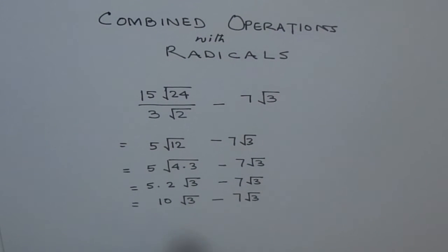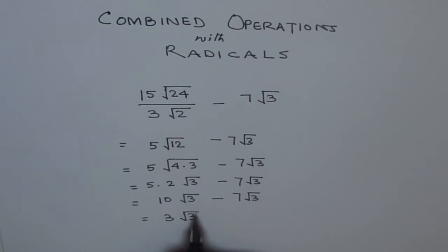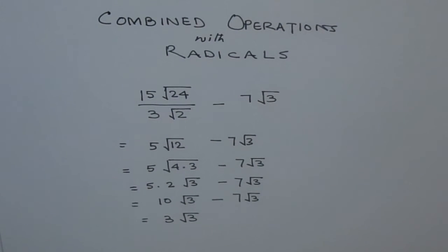By doing this we have got same radicals. Do you see that? Like radicals. Now we can do 10 minus 7 and we get 3 radical 3. So this is how you can do combined radical operations.